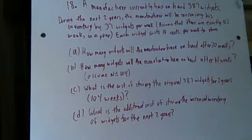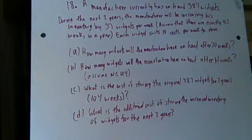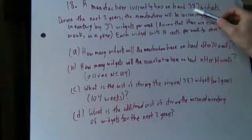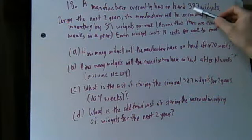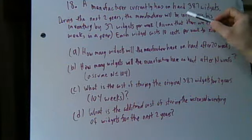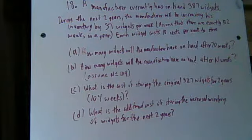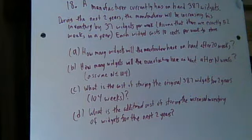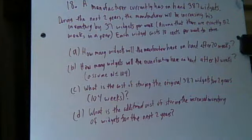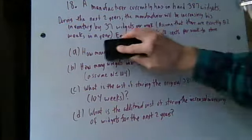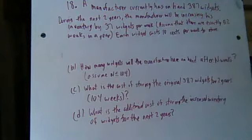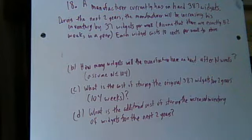Problem A: How many widgets will the manufacturer have on hand after 20 weeks? Well, he starts off with 387, then each week following you'll add an extra 37. You have to do that 20 times. Just so I have room to write this down, now that we know the question here, I'm just going to erase this one.